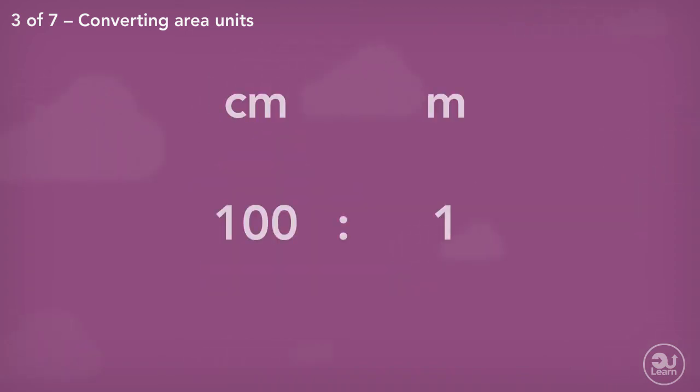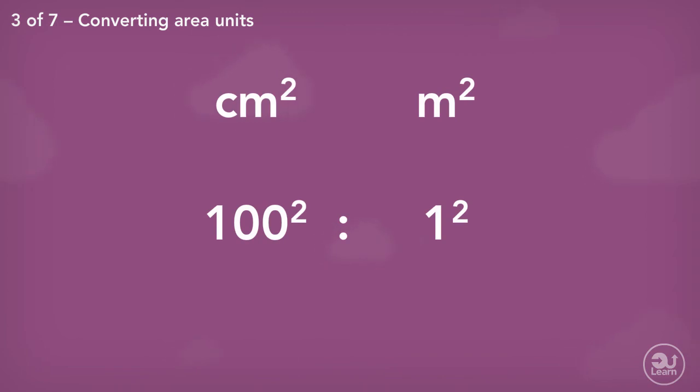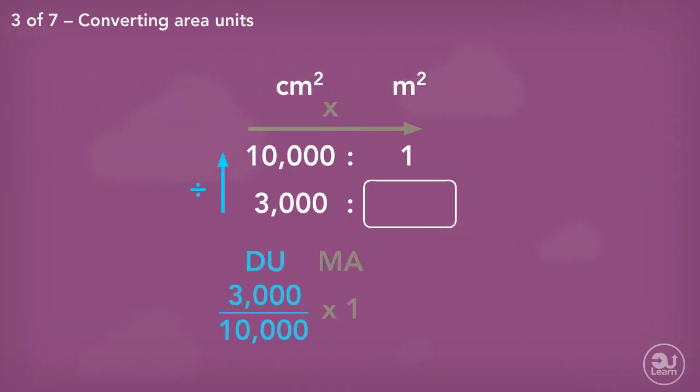We start with the conversion relationship with centimeters and meters. 100 centimeters is equivalent to 1 meter. Since it is a squared unit, we'll be using 100² to 1², which is equal to 10,000 to 1. Now we divide up, multiply across. 3,000 centimeters squared is equivalent to 0.3 meters squared.